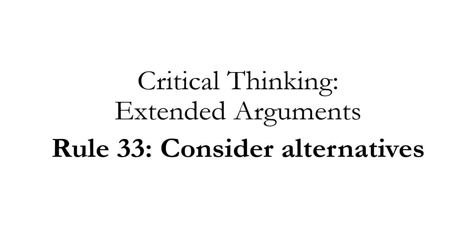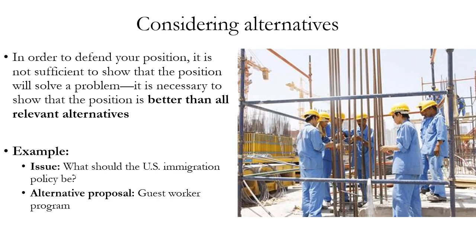This presentation is based on 'A Workbook for Arguments,' third edition, by David Morrow and Anthony Weston. We're going to look at Rule 33 from that book, which is considering alternative positions to an issue. Considering alternatives means looking at other possible positions on the issue. Even if you show that your position has some benefit or reason to support it, in order to justify it effectively you need to show that it has more reason in support of it than other positions, or that it has more expected net benefits, or that other principles of action support it more effectively than other positions.